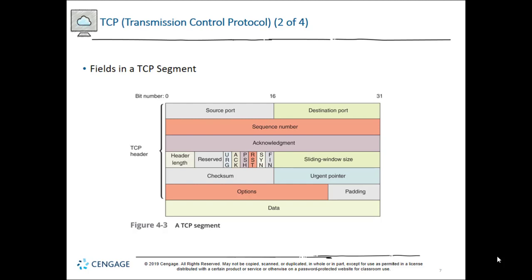If we take a look at the TCP segment, you can see all the extra information that has to go along with the data at the bottom. When you say you're paying for a gig connection and not getting gig speed, you might actually be getting it — you're just not getting a gig-sized file in one second because you have all that extra overhead coming through, plus servers don't send information out at gig speed.